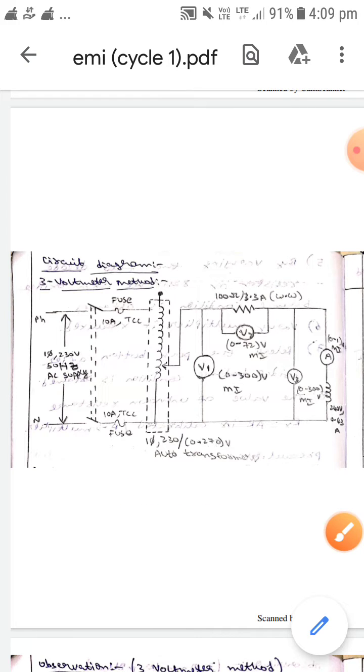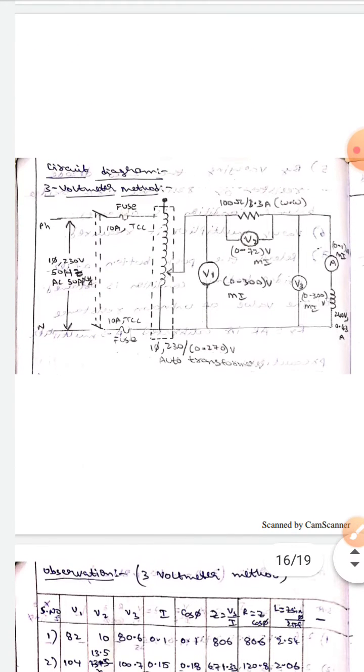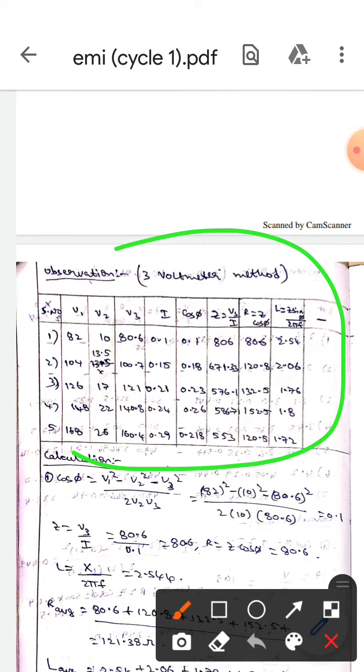And in this way we will draw the table with columns V1, V2, V3, I, cos phi. Here Z equals V3 by I, whereas R equals Z cos phi.